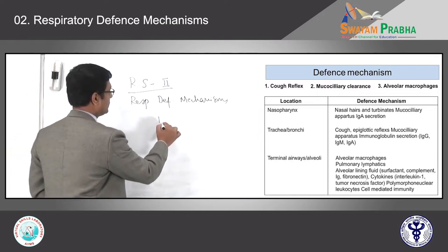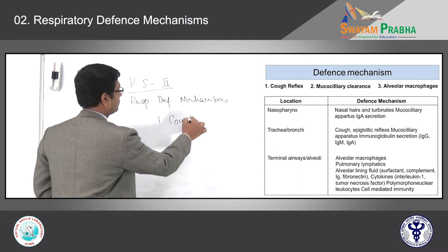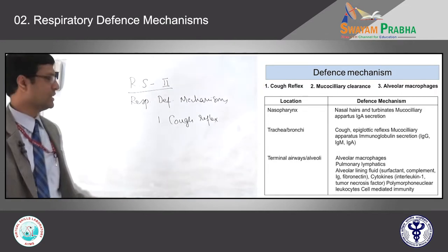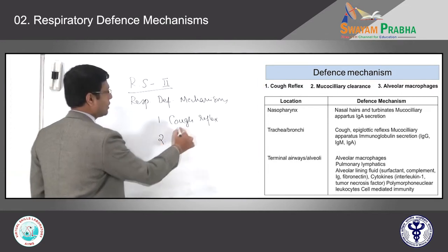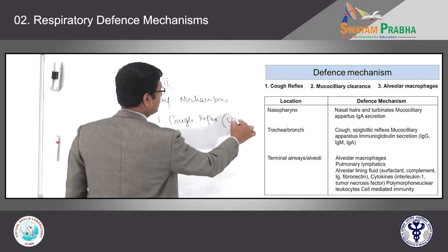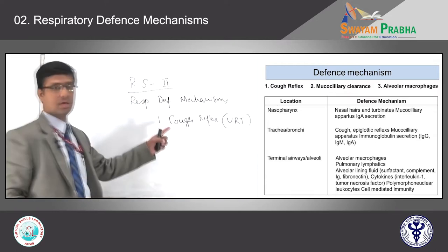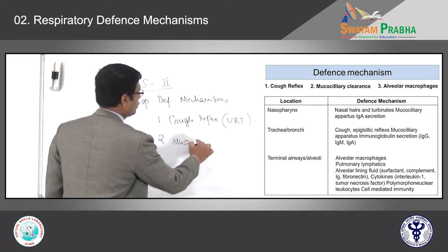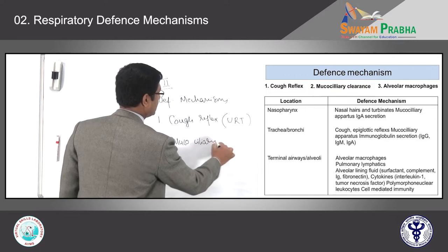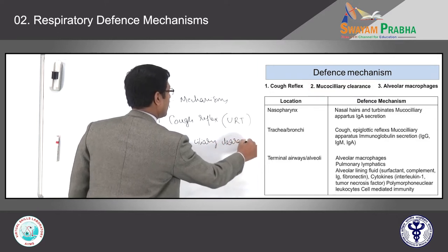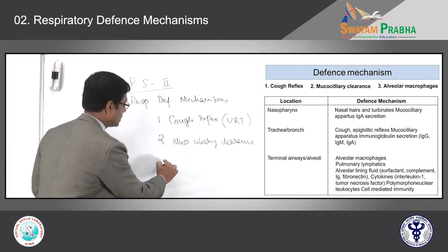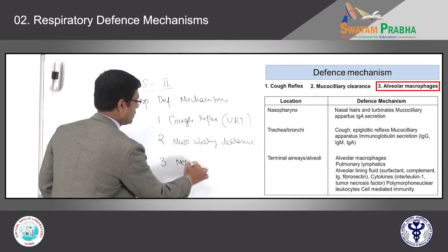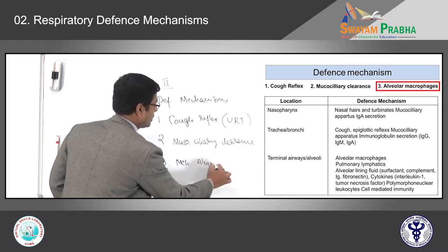The first defense mechanism is the cough reflex, which is mainly in the upper respiratory tract but may also be present in the lower respiratory tract. The second is Mucociliary Clearance. The third and last defense mechanism is the function of alveolar macrophages.